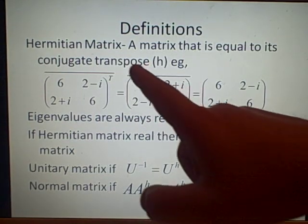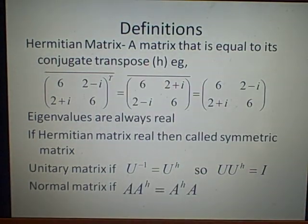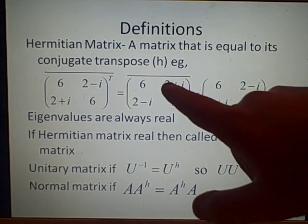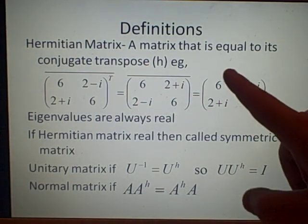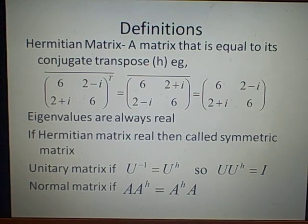Then we want to find the conjugate, so we reverse all the imaginary values. So we've got, so that plus i becomes a minus i. This minus i becomes plus i. And we can see this final matrix here is equal to the beginning here, so it's a Hermitian matrix. So that's correct.